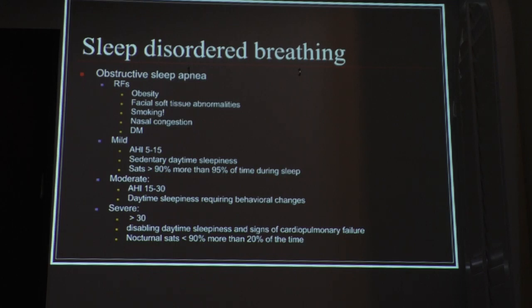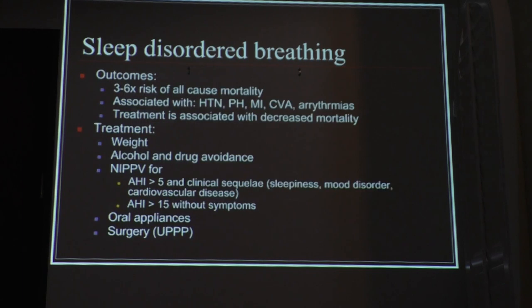These severe OSA patients usually have desaturations less than 90% about 20% of the time. It's important to treat because the mortality is high. OSA is associated with secondary hypertension, pulmonary hypertension, myocardial infarction, strokes, and arrhythmias — usually atrial arrhythmias. Treatment is associated with improved quality of life and decreased mortality.